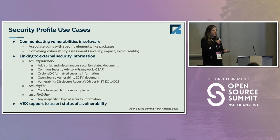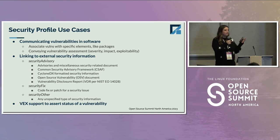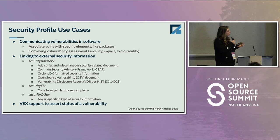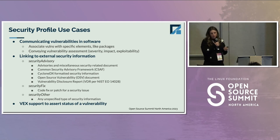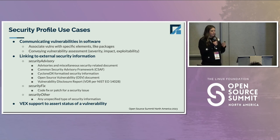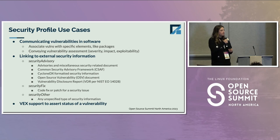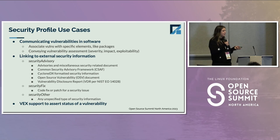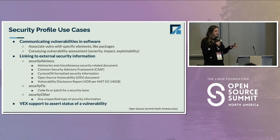Maybe you just want to link to external vulnerability information — this might be in relationship to a particular CVE. Or maybe you want to include security information in a security relationship, such as linking to some sort of security advisory. This has support for CSAF, CycloneDX formatted security information, OSV documents, and VDRs per the NIST Executive Order 14028. You can also include information about a security fix for a CVE, whether that's a code fix or a patch. And if information doesn't fit into fix or vulnerability, you can use security other, which is a catch-all for any unspecified type of security information.